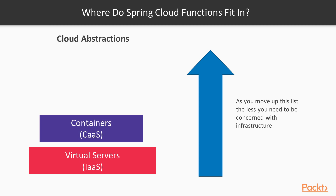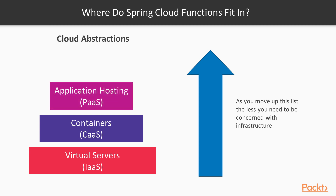Next we have Container as a Service. Cloud providers have implementations like Elastic Container Service in AWS and Google Container Engine in Google. Developers create their applications, build their containers, and deploy these containers into the cloud infrastructure, thinking less about infrastructure and more about the containers. Then we have Platform as a Service offerings like Elastic Beanstalk, Google App Engine, or Heroku, where developers just deploy the application into the platform, which also typically handles auto-scaling.